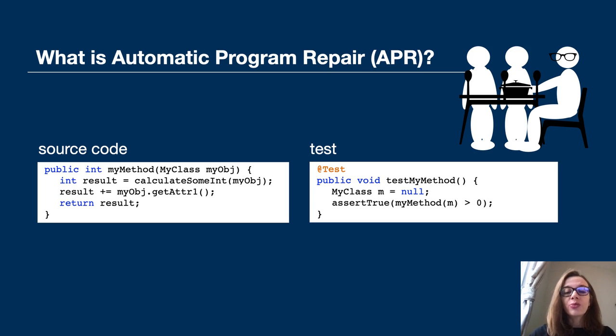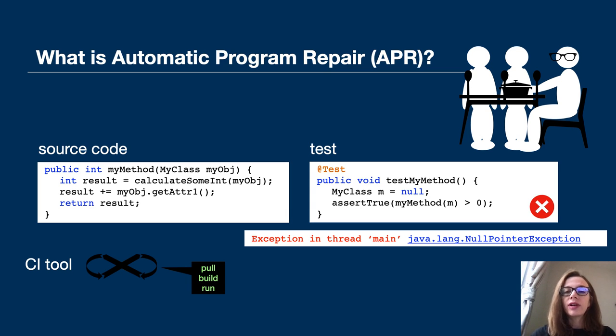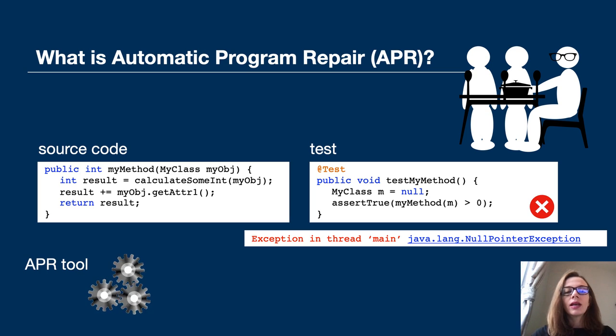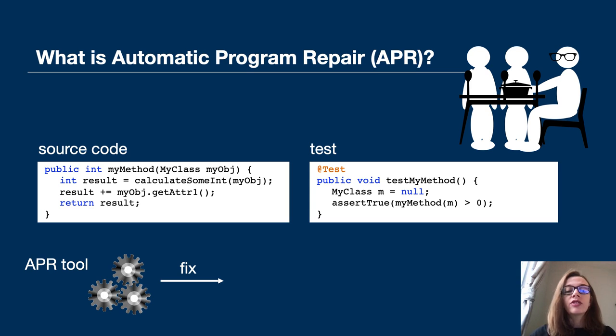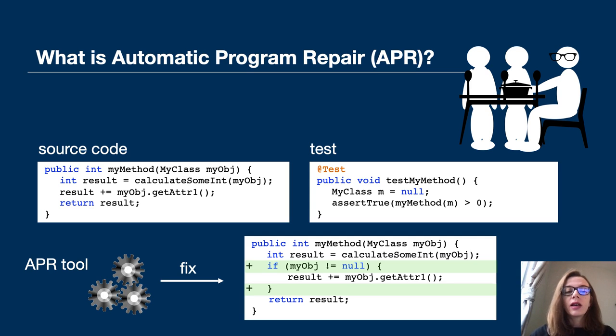During your lunch break, a continuous integration tool pulls and builds your code and runs tests. This time the test fails due to a null pointer exception. The continuous integration tool triggers an APR tool that generates a fix. The fix is a null pointer checker and it passes the test.